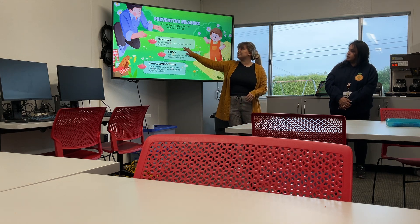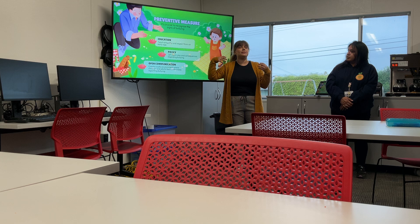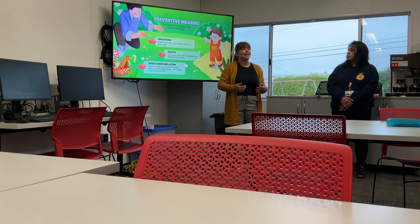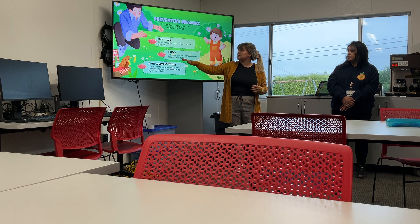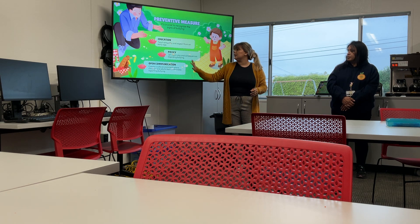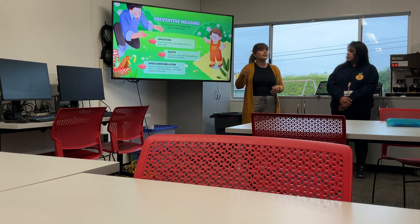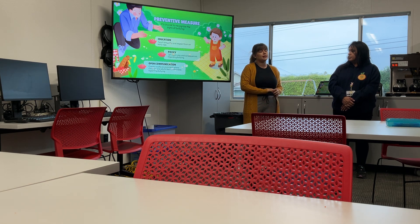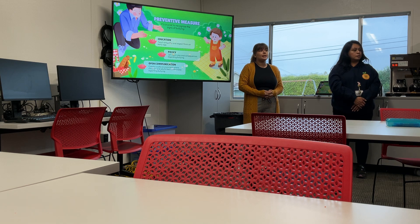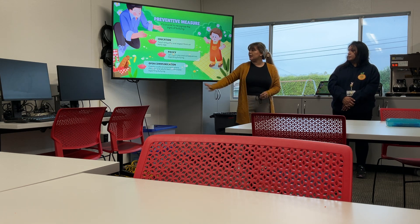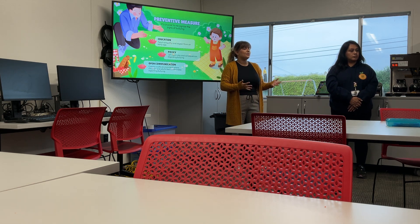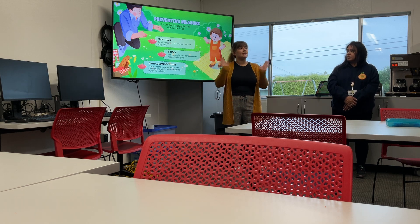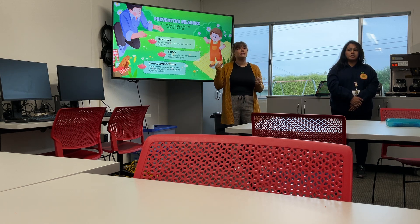Education: teaching empathy and respect from an early age is something we talk about heavily at school — always be kind, the golden rule. Policy: set clear rules and consequences regarding bullying; our office has a system in place. And then open communication — we don't know what happens once students leave us, which is why we need open communication between families and the school so we can all work together.